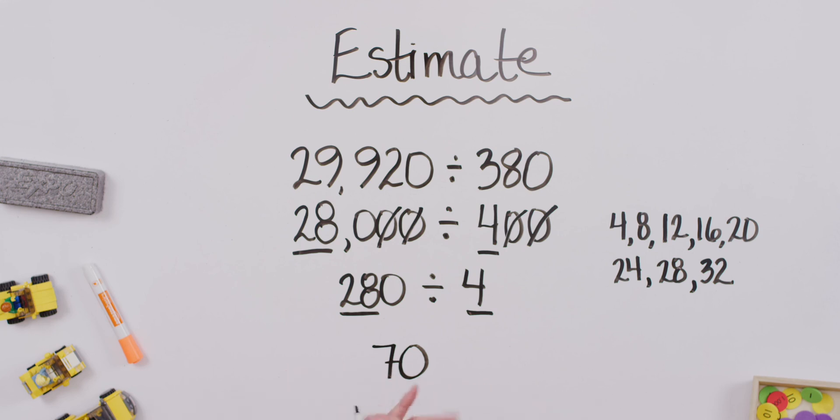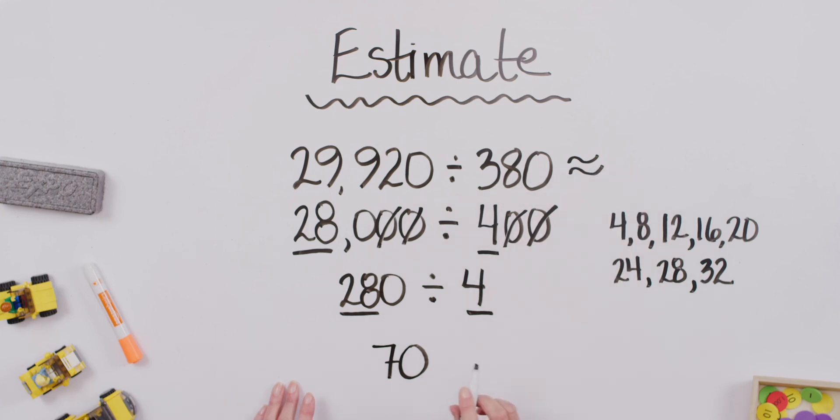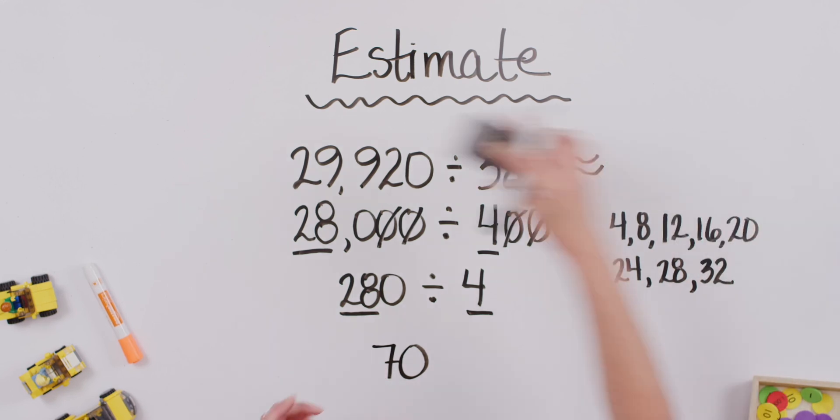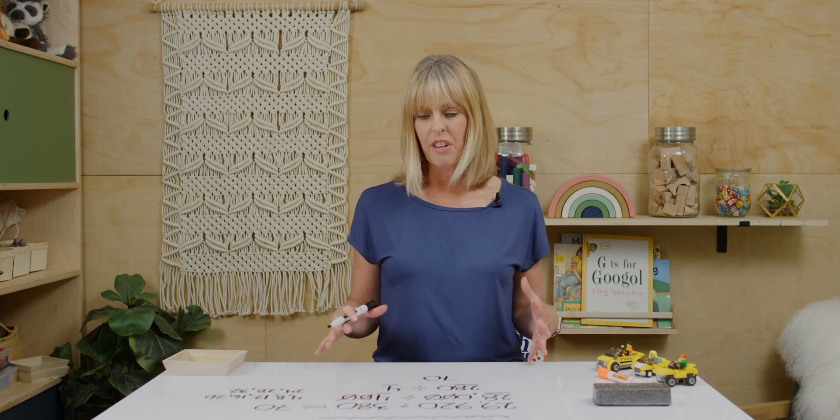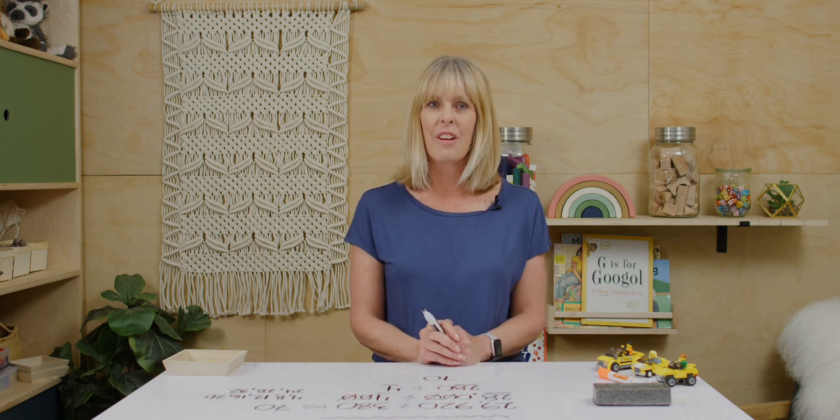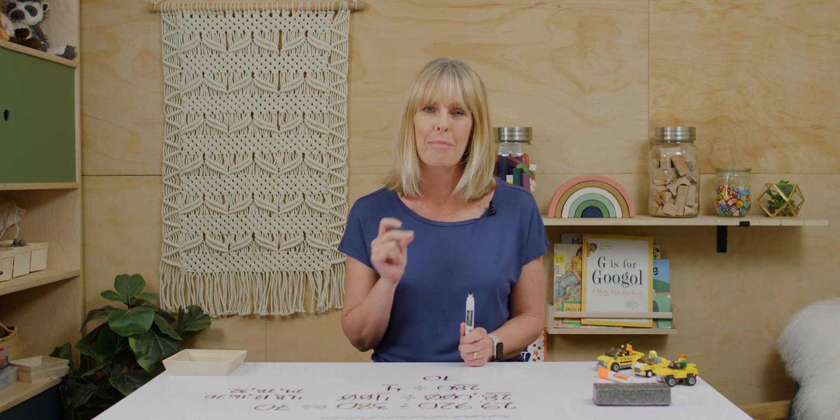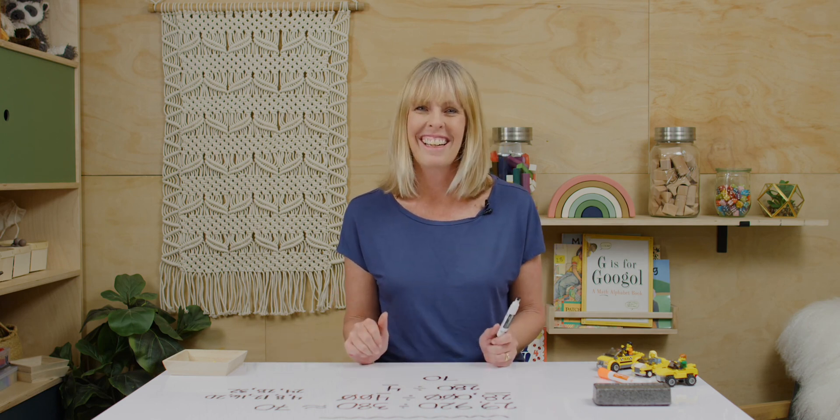So, have fun with some more estimation. We would actually write this. Remember our fun little equal sign that has some curves in it? We would say 29,920 divided by 380 is approximately 70. Great. Good job estimating today, and we did a lot of great work. Have fun with some of the extra word problems in your workbook, and I do want to make sure I want to put a little plug in for those mental math exercises. I can't tell you how helpful it is to really know those multiplication facts as we are multiplying and dividing these larger numbers. All right, everyone. We'll see you next time.